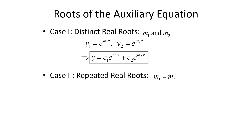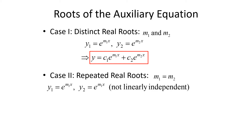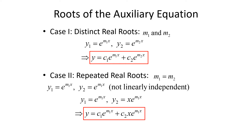Our second case is when we get repeated real roots, where m1 and m2 are actually the same value. This would give us y1 equals e to the m1x and y2 the same thing — since these are identical, they would not be linearly independent. What we need to do to gain linear independence is multiply one of them by x. So y1 equals e to the m1x and y2 equals x e to the m1x, giving general solution y equals c1 e to the m1x plus c2 x e to the m1x.